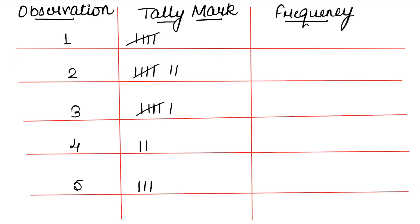Now we calculate the frequency from all the sticks. For observation 1: 5, for observation 2: 7, for observation 3: 6, for observation 4: 2, and for observation 5: 3. After the 4th stick the 5th one crosses through, making counting easy. This completes our frequency distribution table.